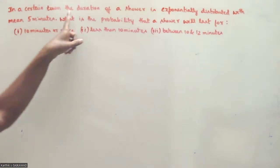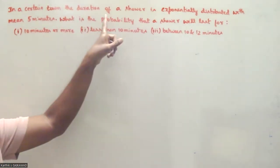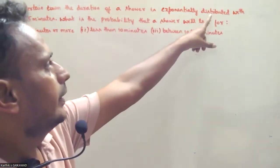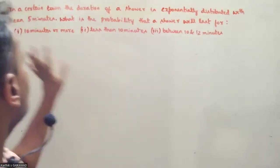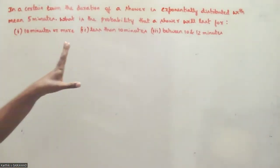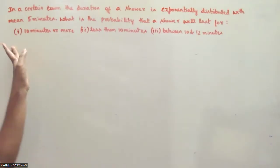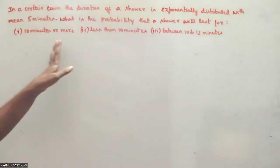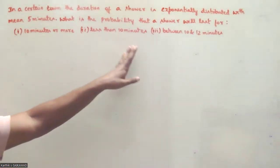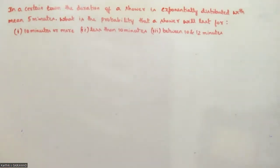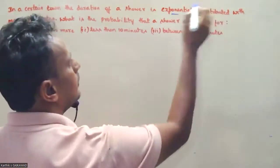In a certain town, the duration of a shower is exponentially distributed with mean 5 minutes. What is the probability that a shower will last for: first, 10 minutes or more; second, less than 10 minutes; third, between 10 and 12 minutes?